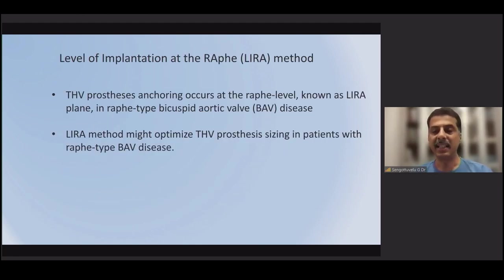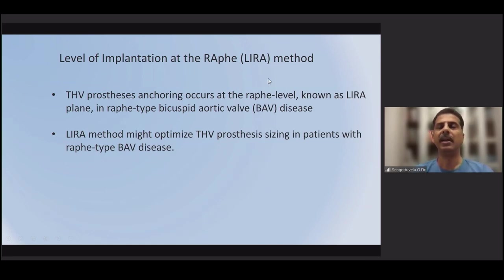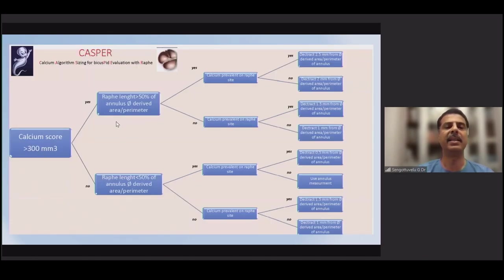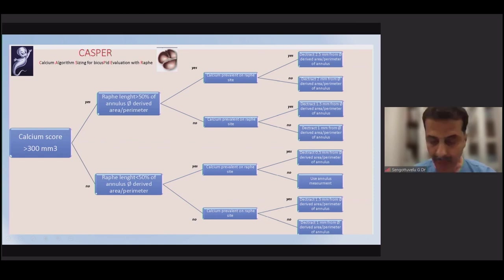There are several other methods of sizing. The LIRA method — level of implantation at raphe method — takes measurements at the raphe level where anchoring is expected in patients with a calcified raphe. There is also the Casper method, based on a calcium algorithm incorporating the amount of calcium, length of the raphe, and annulus diameter. If calcium burden is very high, the valve size is accordingly reduced. A complex formula calculates the calcium score, raphe length, and presence of calcium to decide whether to increase or reduce the valve size.